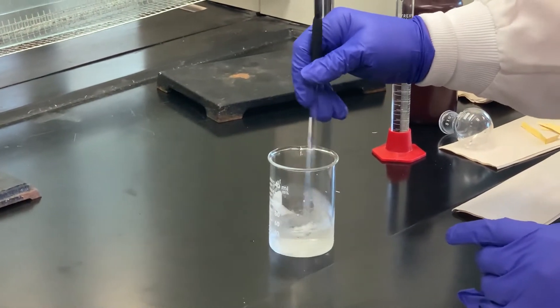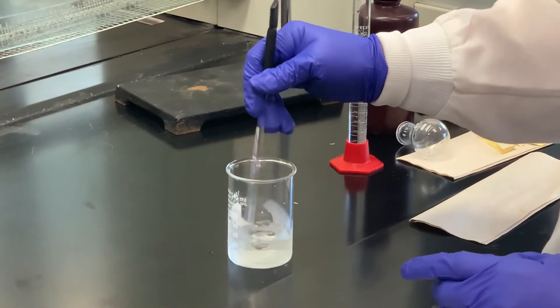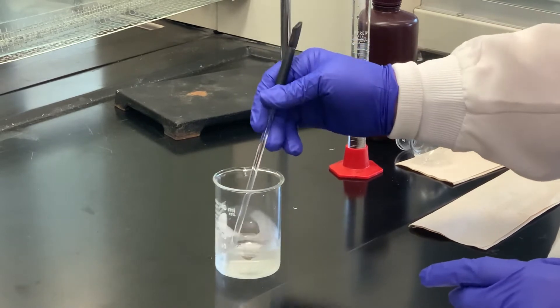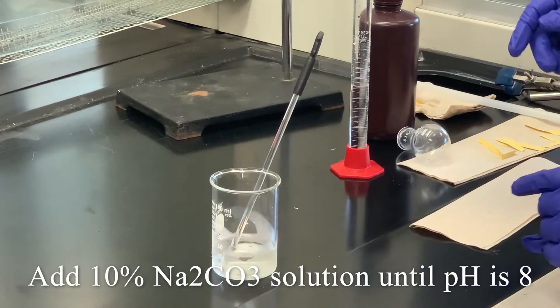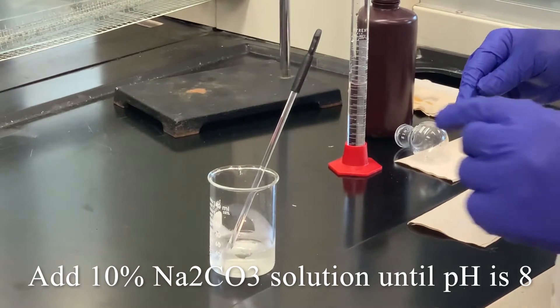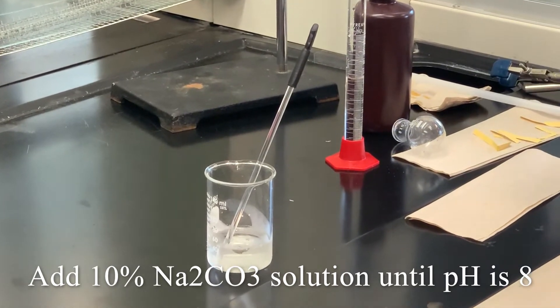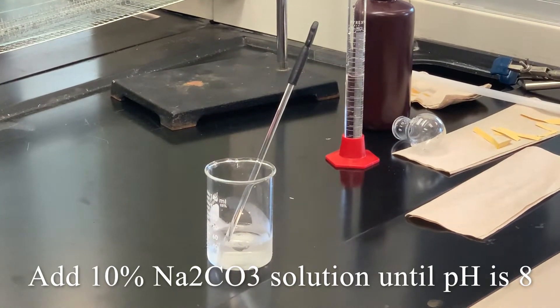Then what I'm going to do is add 10% sodium carbonate until we get a pH of around 8. At that point, the benzocaine should precipitate, and once it precipitates, then we can collect it by vacuum filtration.